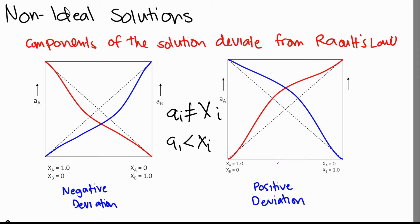For positive deviation, it is the opposite. When we put A into B or B into A, the activity of the components increases — it is a positive deviation from the ideal case. This happens because the interaction between solute and solvent atoms is stronger than solute-solute and solvent-solvent interactions, increasing their activity. For positive deviation, aᵢ is greater than Xᵢ.